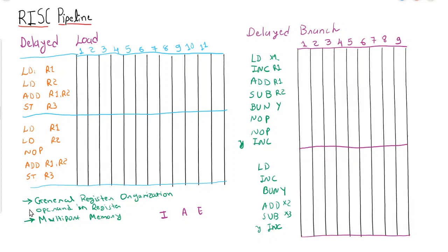If we recall the characteristics of RISC, we discussed that there is a general register organization. We will have many general registers in the CPU, so most operands will be retrieved into the registers. This will save time on memory access. For resource conflicts, multiple segments will try to access the same memory — one for operand and another for instruction — which leads to a lock and creates unnecessary delay.